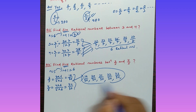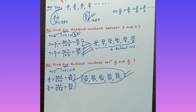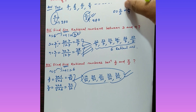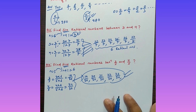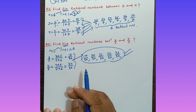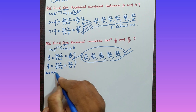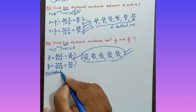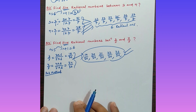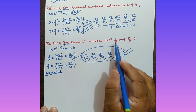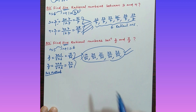Between 18/30 and 24/30, we can find five rational numbers: 19/30, 20/30, 21/30, 22/30, and 23/30. These are the five rational numbers between 3/5 and 4/5. This is the first and easiest method to find rational numbers between any two given rational numbers.